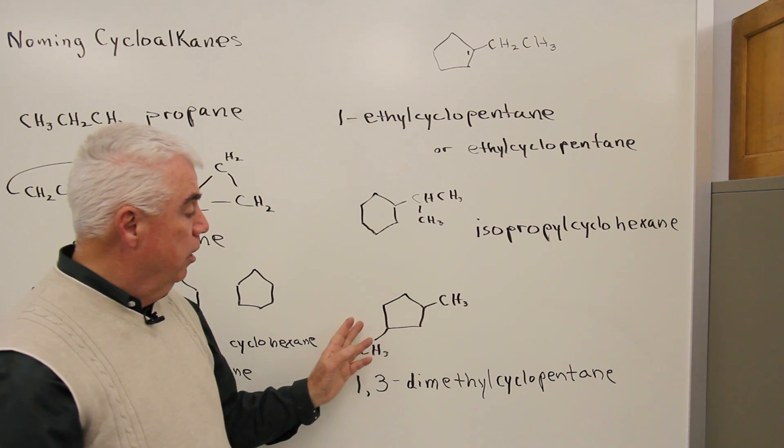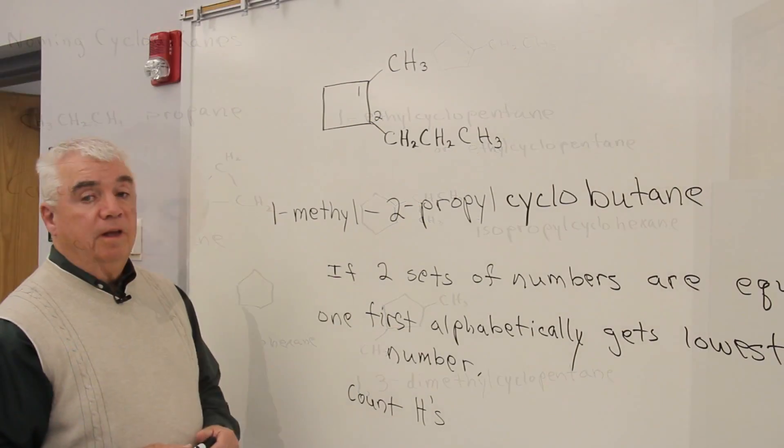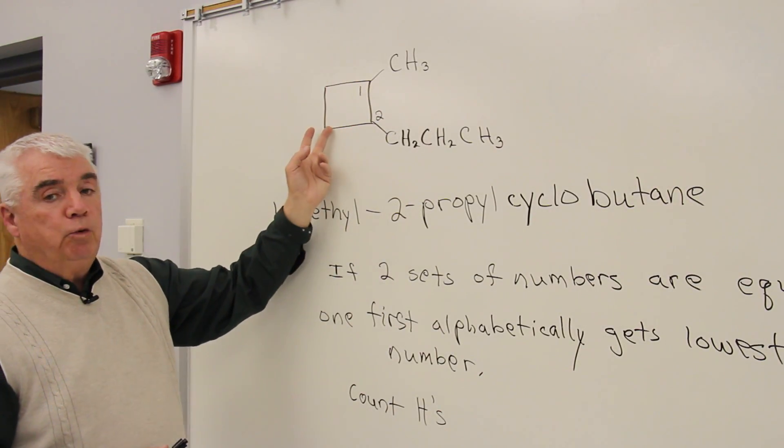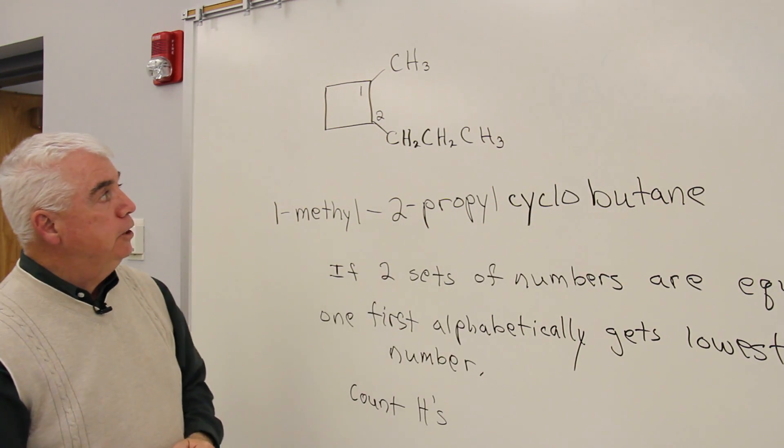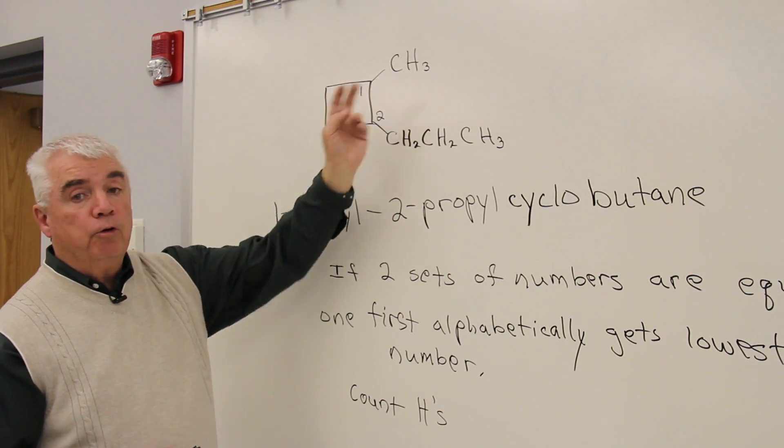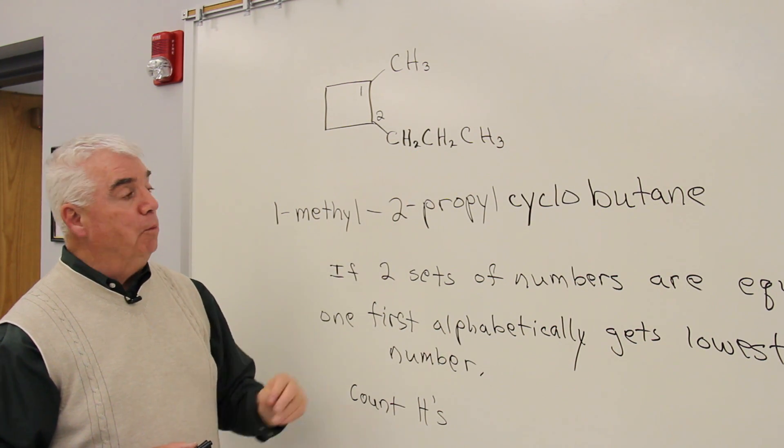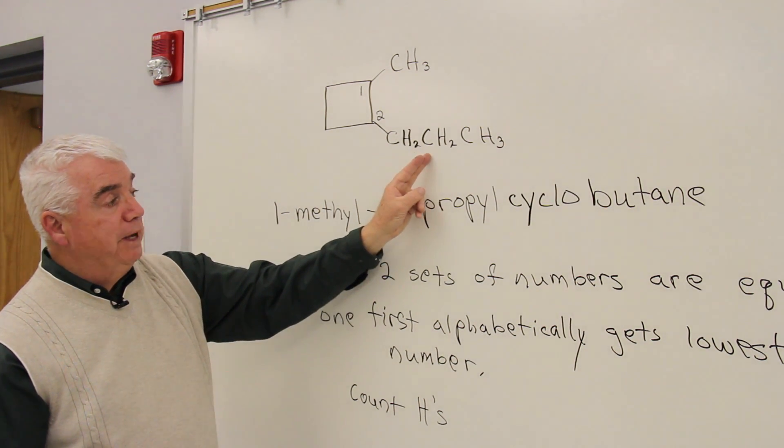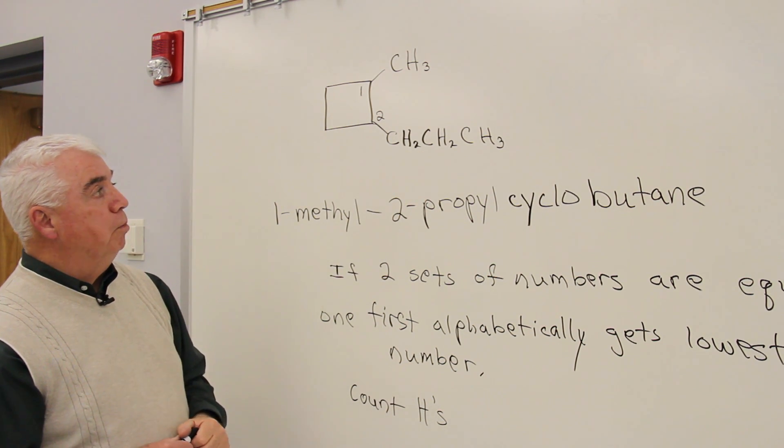Let's look at a structure now where we've got two groups attached, and they aren't the same. Here I've got a cyclobutane ring, so that would be our base word, cyclobutane. We've got a methyl group, and we've got a propyl group. It's not an isopropyl. For isopropyl, it would be attached through the center carbon, but it's just propyl.